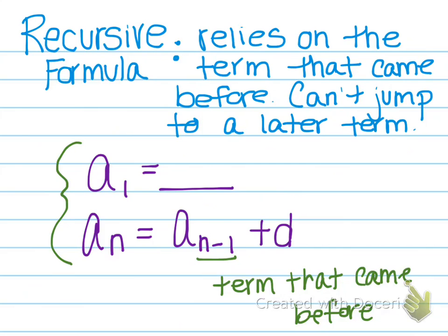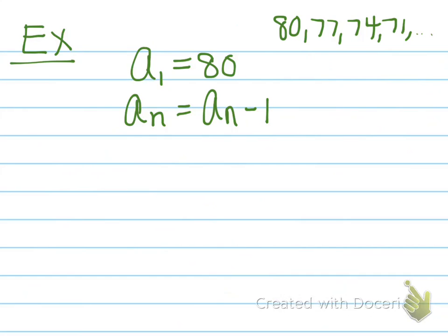Using the arithmetic sequence 80, 77, 74, 71, and so on: a sub 1 is 80, and a sub n equals a sub n minus 1 minus 3. Could you find the 100th term using this? Yes, however it would take a very long time, because to get to term 100 you need term 99, and to get term 99 you need term 98, and so on. This is where explicit formulas are more helpful when jumping to large term numbers like 100.